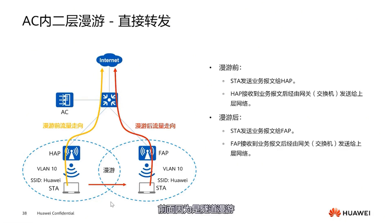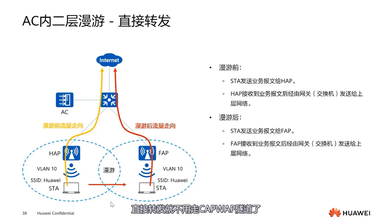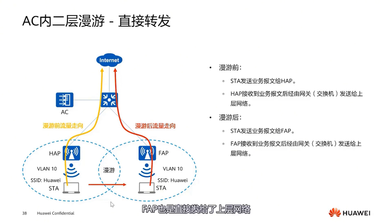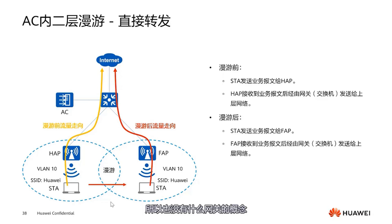For direct Layer 2 roaming, because it is not tunnel forwarding, all data does not travel via the CAPWAP tunnel. Before roaming, user data flows from the STA to the HAP, and HAP sends it directly to the network. After roaming, the terminal first sends to the FAP, and FAP also sends directly to the upper network. Because it's Layer 2, there's no concept of a gateway.